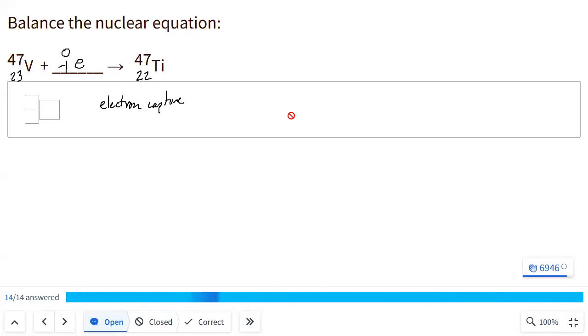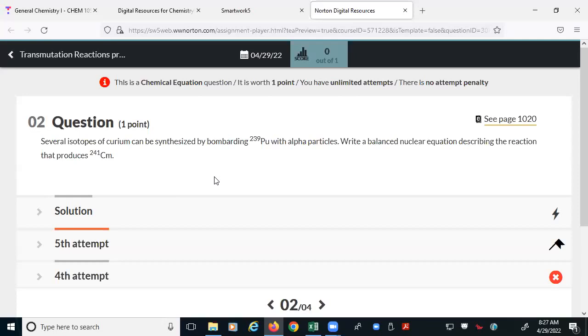Any questions related to transmutation reactions and solving these nuclear equations? Okay. So this one is a little bit more complex. What we have to recognize: we are bombarding plutonium-239 with alpha particles. So on this side of the equation, we have plutonium and we have an alpha particle colliding. And on the other side, we're going to make curium-241. So going to the periodic table, you see that plutonium is element number 94 and curium is element number 96.